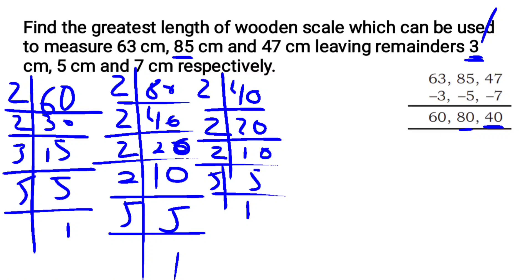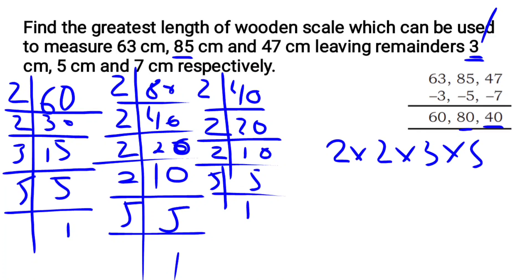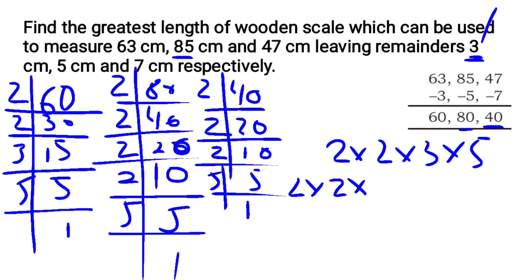The prime factors of 60 are 2 × 2 × 3 × 5. The prime factors of 80 are 2 × 2 × 2 × 2 × 5. Now we identify the common factors across all three numbers — 60, 80, and 40.